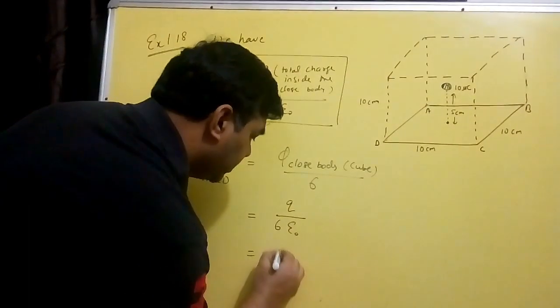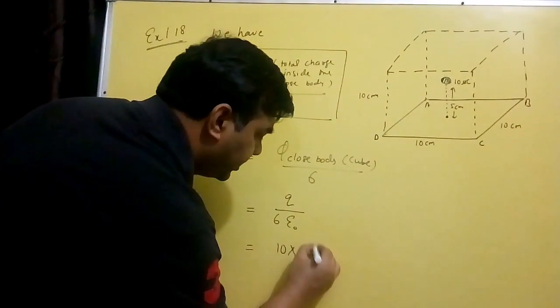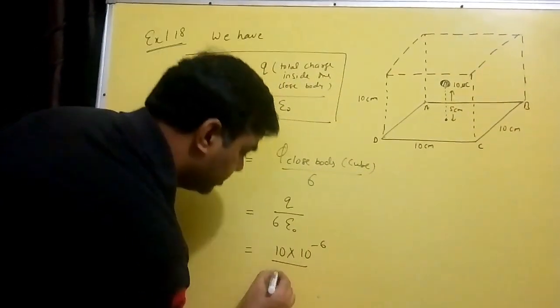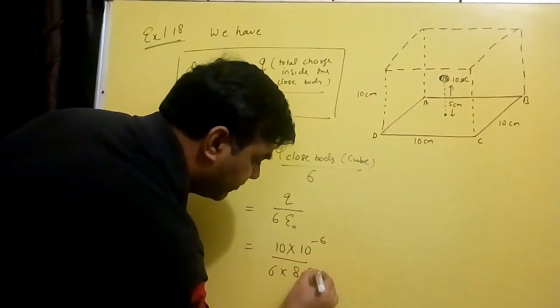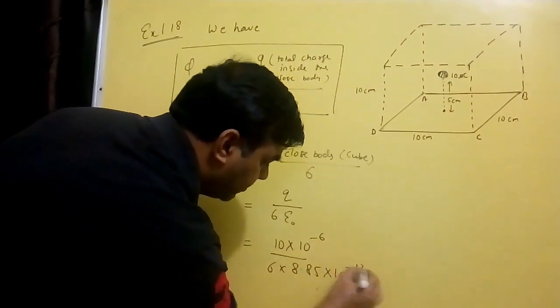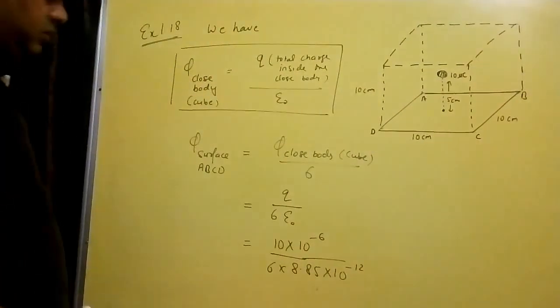q's value is 10 micro, 10 to the power minus 6. Epsilon not's value is 8.85 into 10 to the power minus 12.